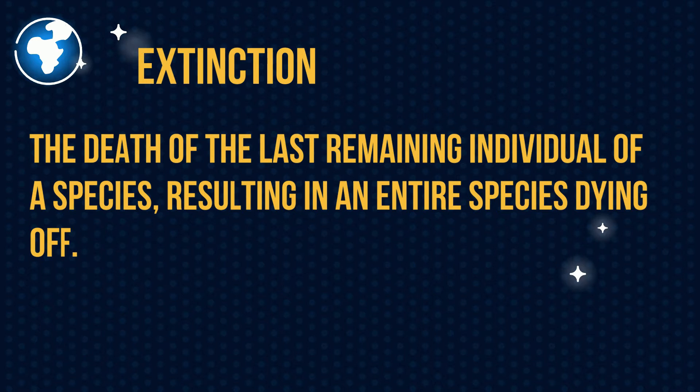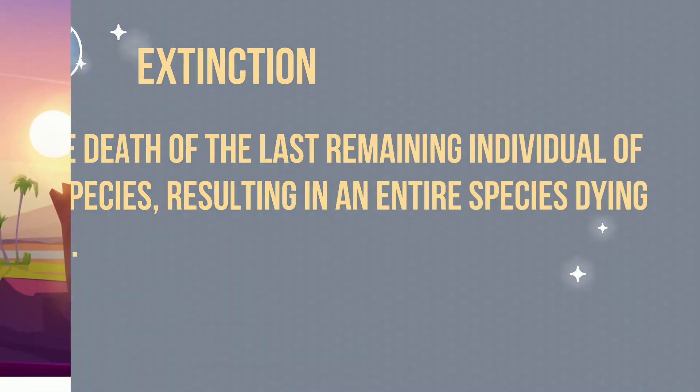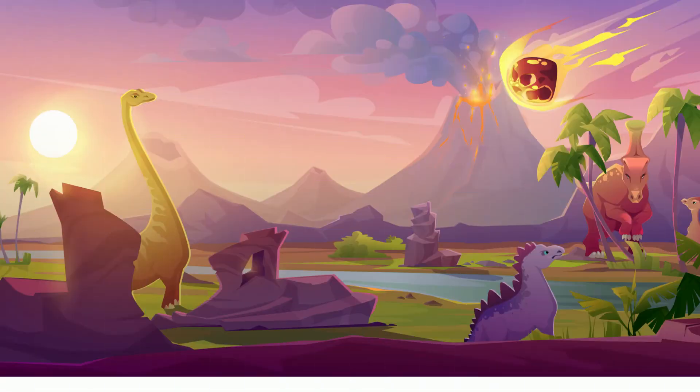Extinction: the death of the last remaining individual of a species, resulting in an entire species dying off. In the pictures, you have dinosaurs that became extinct and a meteor getting ready to strike the earth and possibly causing their extinction.